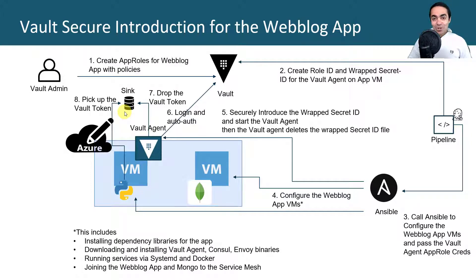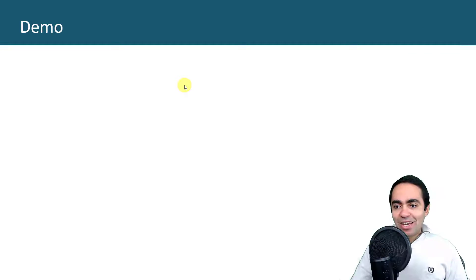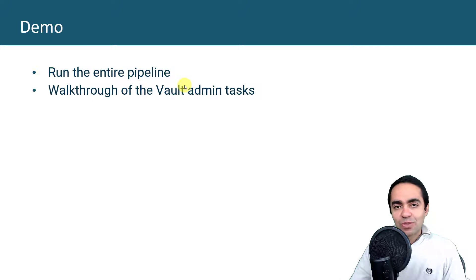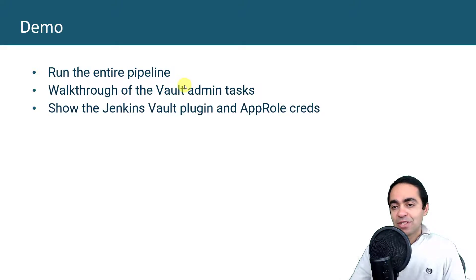Hopefully that's been clear. It's a number of steps, but once you build it your application is pretty secure — you're delivering secret zero securely. The only manual process is in the very beginning when the Vault admin creates the AppRoles and so on. For the demo today: I'll run the entire pipeline — it takes about six to seven minutes — and while it's running I'll walk through the Vault admin tasks, the Jenkins Vault plugin and AppRole credentials, and then the Jenkins build itself and the Jenkinsfile where all the magic happens.